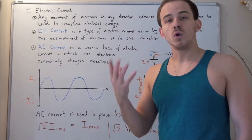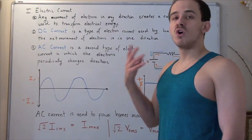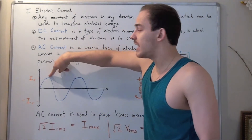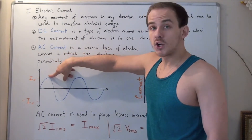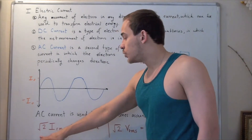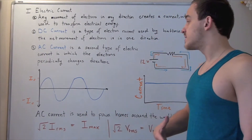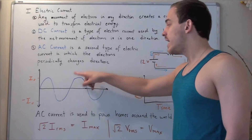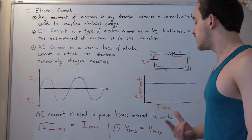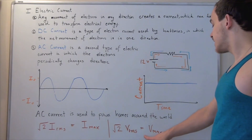Likewise, in order to calculate the voltage, they calculate the RMS voltage. Because if you graph voltage versus time, you will also get a sine wave. To find the highest possible current value, the maximum I, you use the following formula: you take the RMS value multiplied by the square root of 2 (or 1.4) to get I-max. Likewise, because voltage has the same waveform, to get V-max you take V-RMS multiplied by the square root of 2.